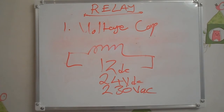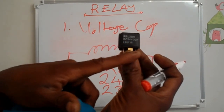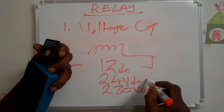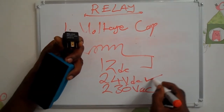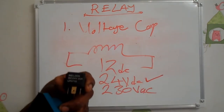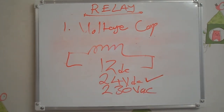In DC voltage you have 12 volts DC and 24 volts DC, so it depends on the area of your application. For example, look at this relay — you see DC 24 volts, 20 amps. So this relay I'm holding: if you give it 12 volts you cannot trigger it, and if you give it 230 volts AC it will burn the coil. That is the voltage classification by voltage capacity.